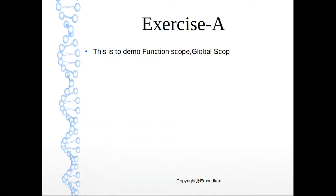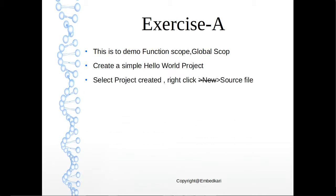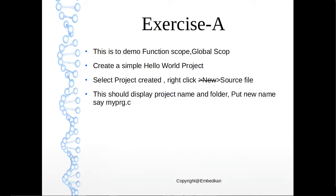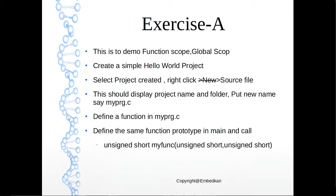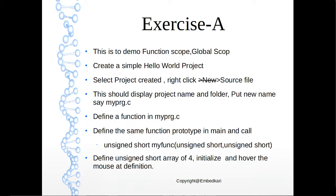For the exercise, we will create a simple hello world project, then right-click and add a new source file. The idea is to demonstrate global scope, so I need to add an extra file to the project. We'll define a function in that file, use it from main, and define an unsigned short array of four elements to show how the array is stored.